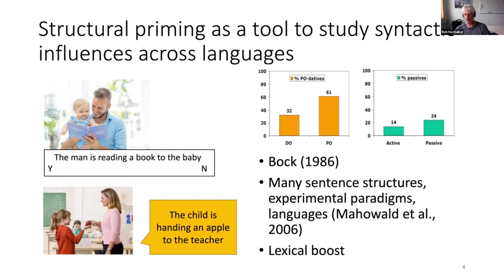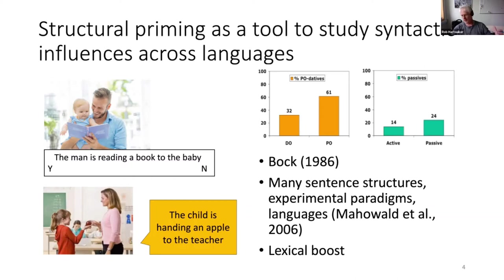The same was true for actives and passives. Structural priming has been shown using many different structures, paradigm versions, and languages. Meherwald and colleagues — this should be 2016 — demonstrated in a meta-analysis that this is quite a robust phenomenon. They also found that the main moderator of structural priming is lexical overlap between prime and target: if the verb used in the prime is also used in the target, the priming effect is substantially stronger. This increase is often referred to as the lexical boost.